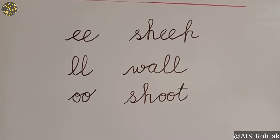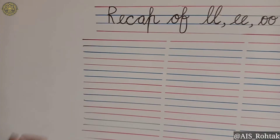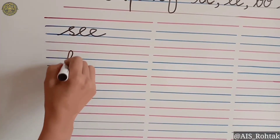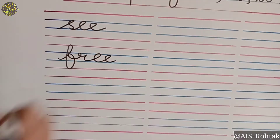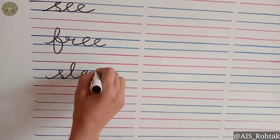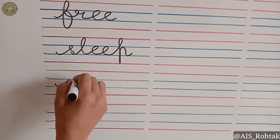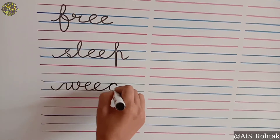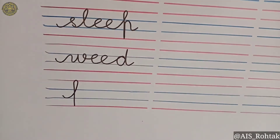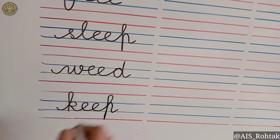Now we will see some more words with these long sounds. First word: 'free' — F-R-EE. 'Sleep' — S-L-EE-P. 'Weed' — W-EE-D. 'Keep' — K-EE-P.